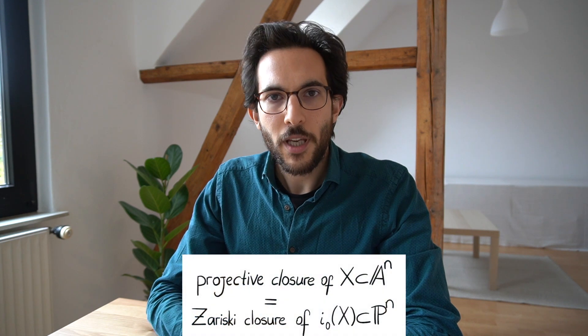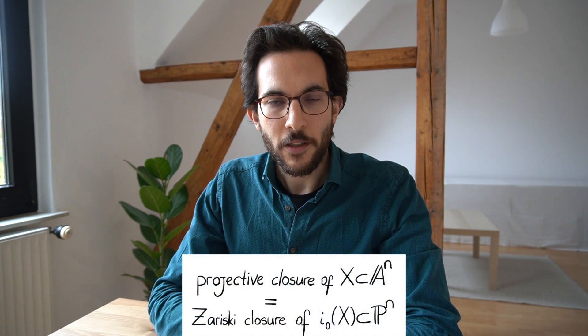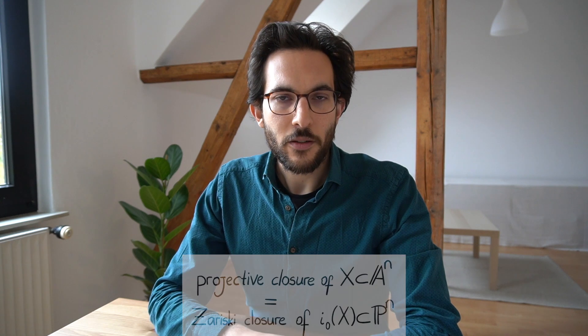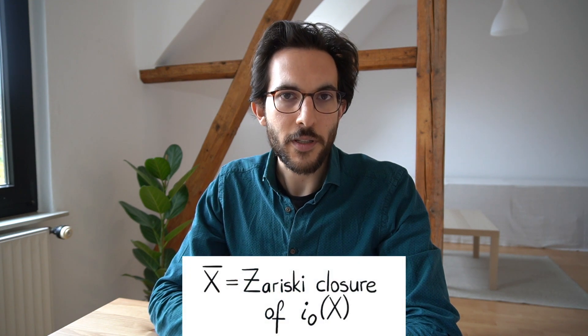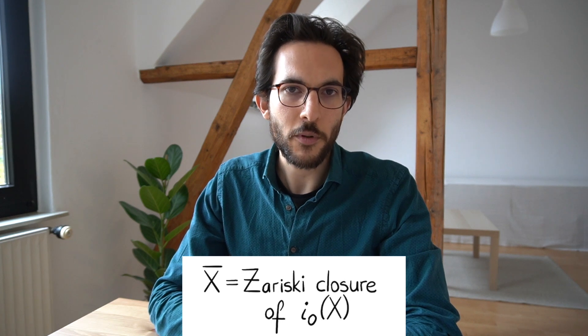If we take X, the zero set of polynomials in An, we map X into Pn via this inclusion and then take its closure inside Pn with respect to whatever topology is available. Over Rn or Cn you have the Euclidean topology, but the Zariski closure is more widely available and works for finite fields too. It is a fact that the Zariski closure and the Euclidean closure coincide, so we work with the Zariski closure.